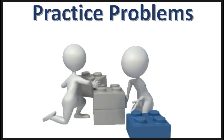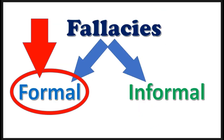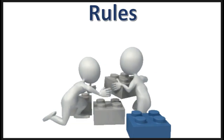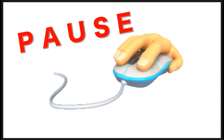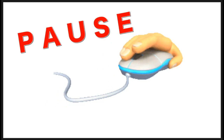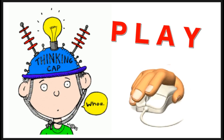Now let's get some experience detecting formal and informal fallacies. Remember, formal fallacies only occur in deductive argument forms such as hypothetical syllogisms, etc. The rule of the game is this: I'll ask a question, you press pause to try to answer the question, and then press play again to see if you're correct.